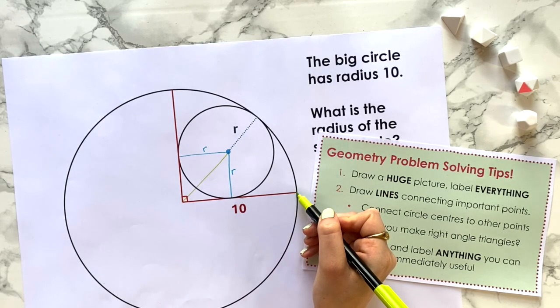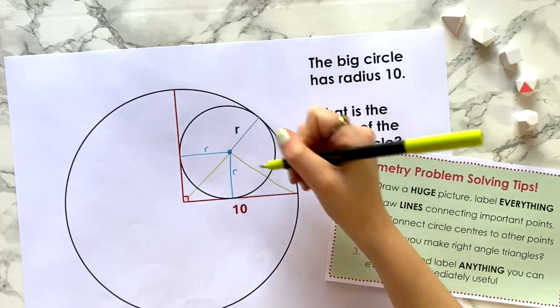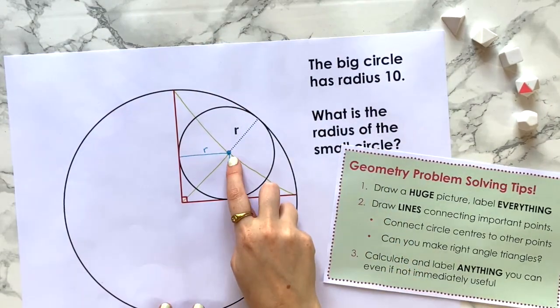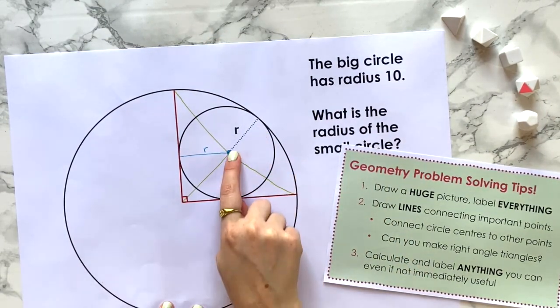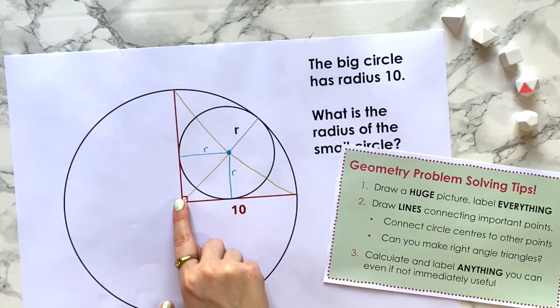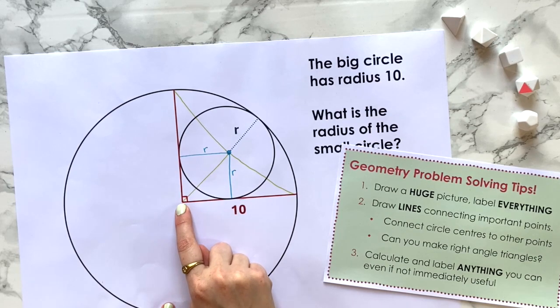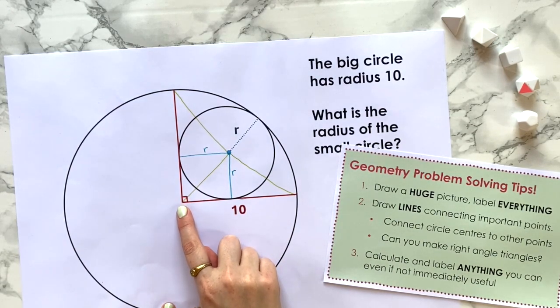What other lines could we draw? Well, I guess another point of intersection is this point here, so why don't we draw in a line connecting the center to that point too. So this circle center is now pretty well connected. What about this circle center? We've also got the center of this bigger circle to think about. Are there any other lines we can draw on connecting this center? We've already got this one.